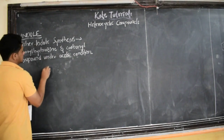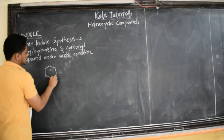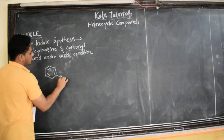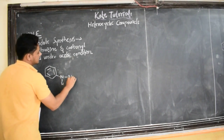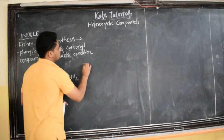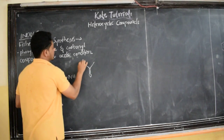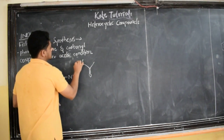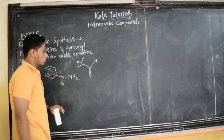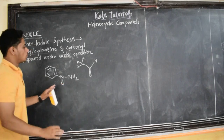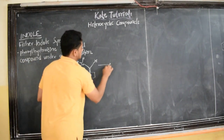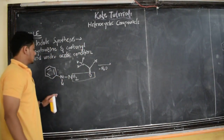Phenyl hydrazine is C6H5–NH–NH2. Now I am going to consider a carbonyl compound: C6H5–CO (a ketone group; if I write H here, it will be an aldehyde). The NH2 and the oxygen of the carbonyl are eliminated as water (–H2O), and we get our next intermediate: a phenylhydrazone with a C=N double bond.